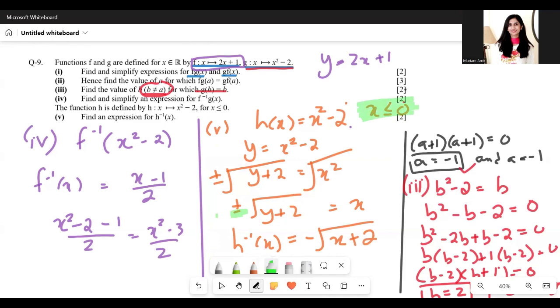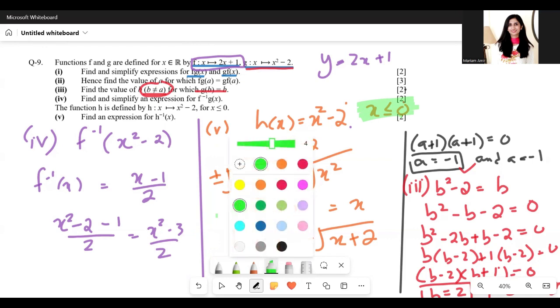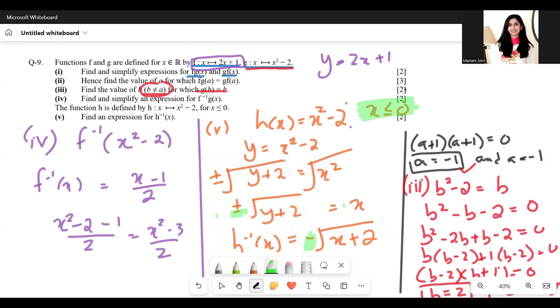Why do we only choose this negative sign? Because of this given domain. If the domain of h(x) is decreasing, then the range of h inverse of x needs to decrease as well. That's why there's a negative sign here.